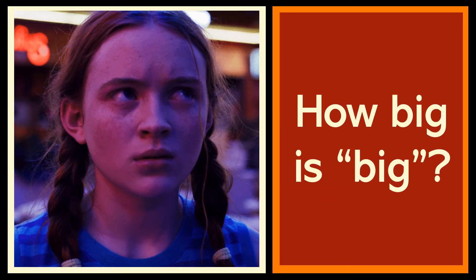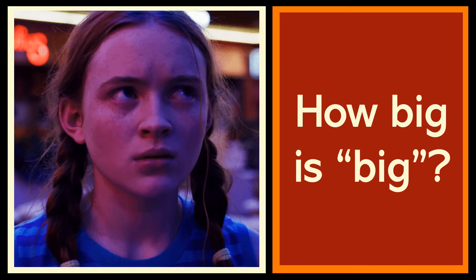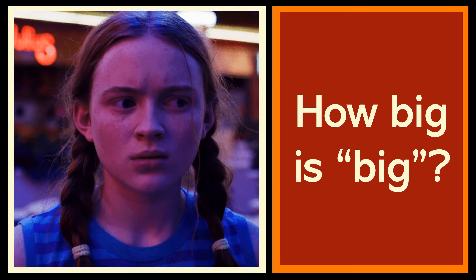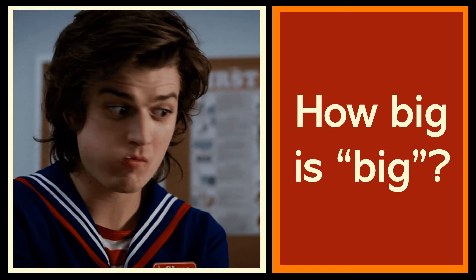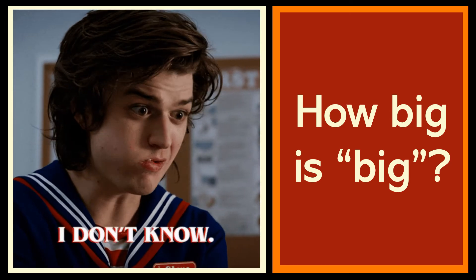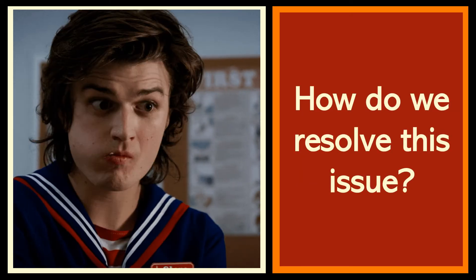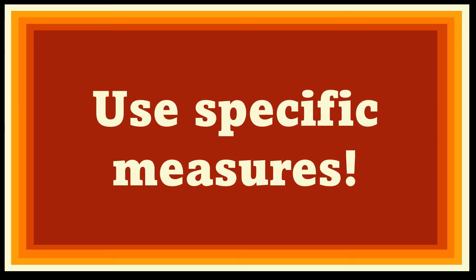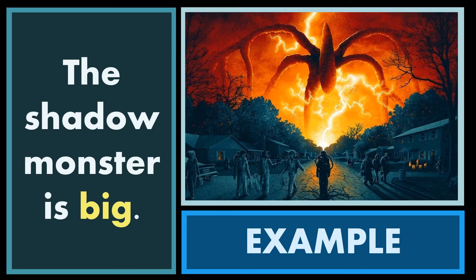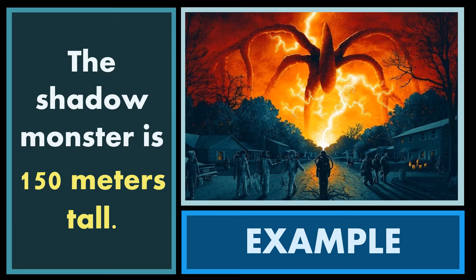How big is big in this context? If you use subjective words, there's going to be ambiguity and the reader will not know how large the object you're describing is. So how do we resolve this issue? Simply use more specific measures. Instead of saying 'the shadow monster is big,' say 'the shadow monster is 150 meters tall.' Now your reader will have a very precise and clear idea of how large the object is.